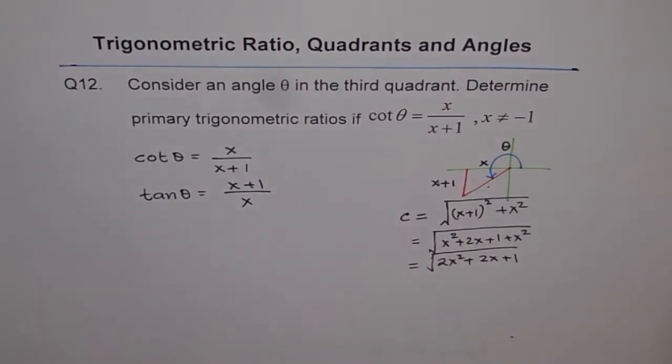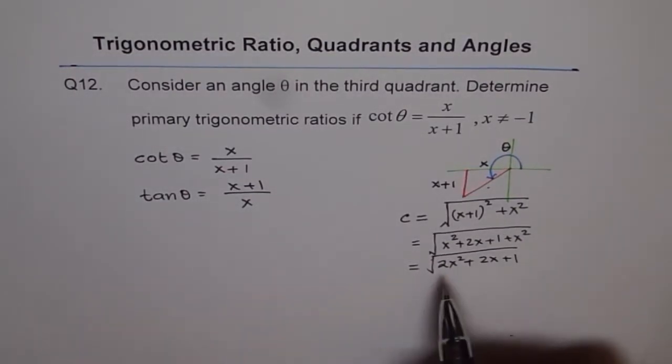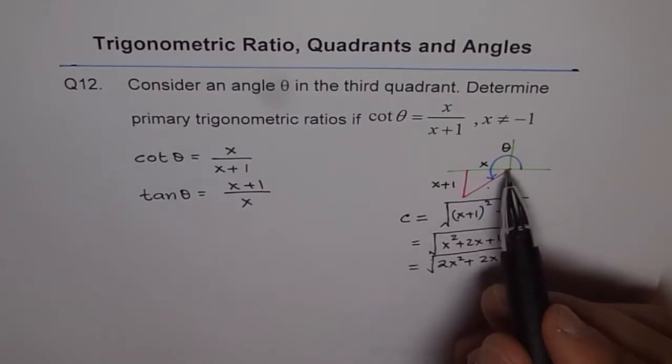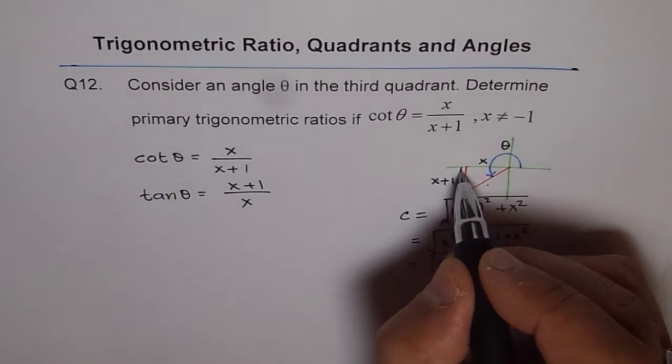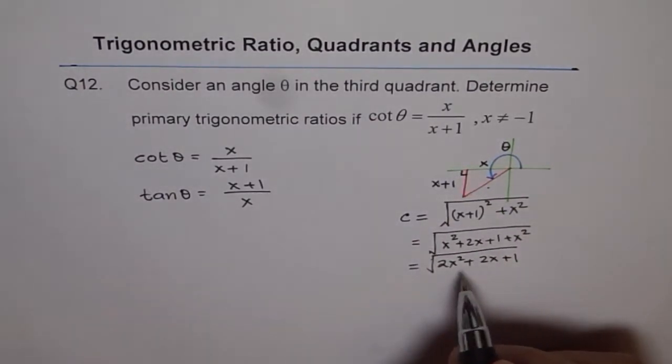Now, so that is our expression for the hypotenuse. So this is the right angle. This is our expression for hypotenuse.